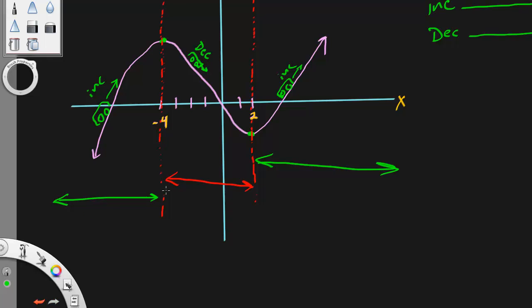Because, as you can see, the two green arrows, this and this, that is increasing. That's the increasing part, and the red one's decreasing.